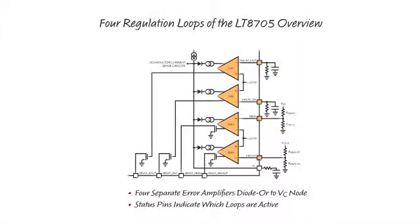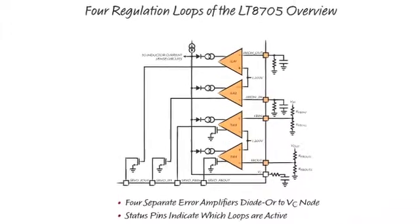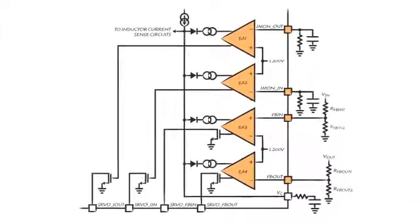For each feedback loop, the part contains one corresponding error amplifier. All four error amplifiers have their outputs diode-ORed at the VC pin, which is also the same pin used to compensate the loops.